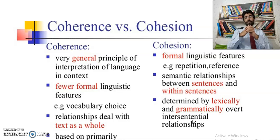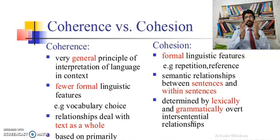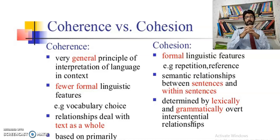Coherence deals with the text as a whole. It talks about the whole paragraph, the whole writing. What is your idea in the whole writing? Coherence actually means the connection of ideas with each other — how they make sense together, how they come together making sense that you are talking about something particular and not varying from your topic.